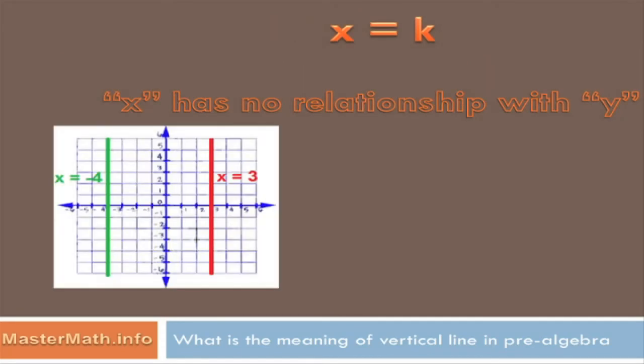And x could equal any number. Here's a graph of x equals 3, and it's just a vertical line that runs through the 3 on the x-axis. And this is x equals minus 4. It's just a vertical line that crosses the y-axis at x equals minus 4.